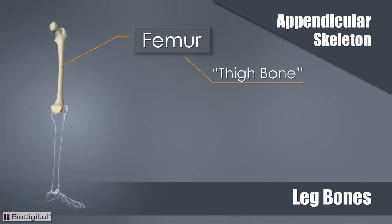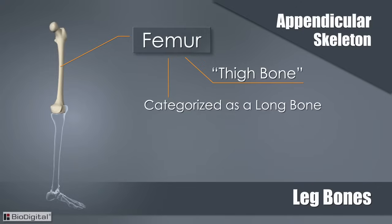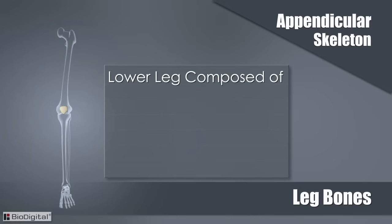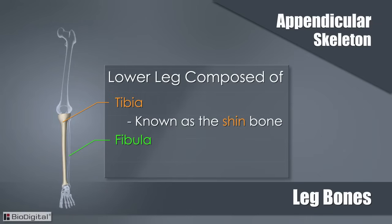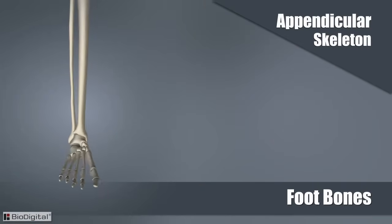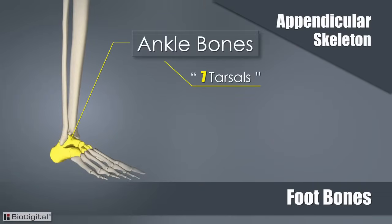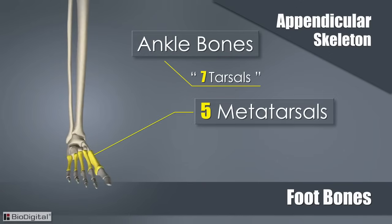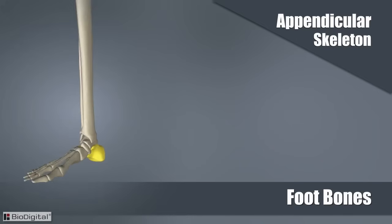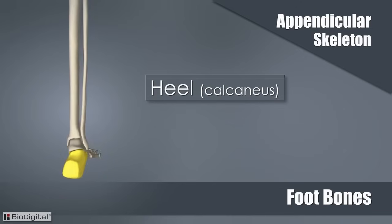Each leg consists of one femur, or thigh bone, located in the upper leg and also categorized as a long bone. Between the upper and lower leg is the patella, or kneecap. The lower leg is composed of the tibia and fibula. The tibia is known as the shin bone, and the fibula runs parallel to it. Attached to the lower leg are the seven tarsals, known as the ankle bones. Attached to the ankle bones are the five metatarsals, and attached to these are the fourteen phalanges, which are the toes. Last, but not least, is the heel of the foot, known as the calcaneus.